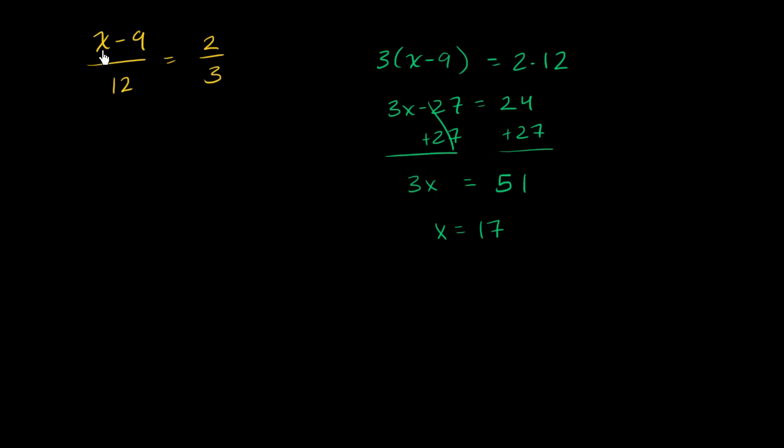And you can verify that this works. 17 minus 9 is 8. 8 twelfths is the same thing as 2 thirds. So this checks out.